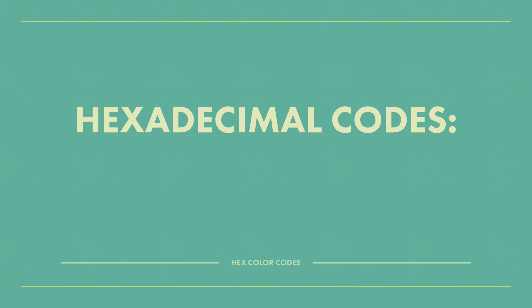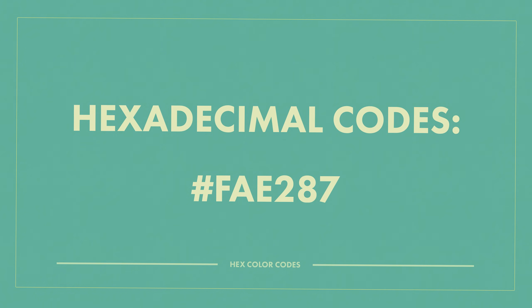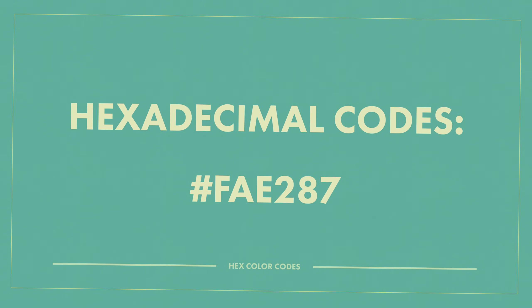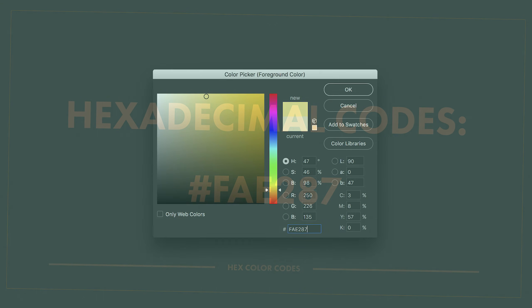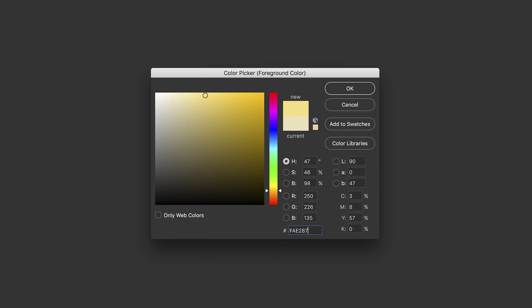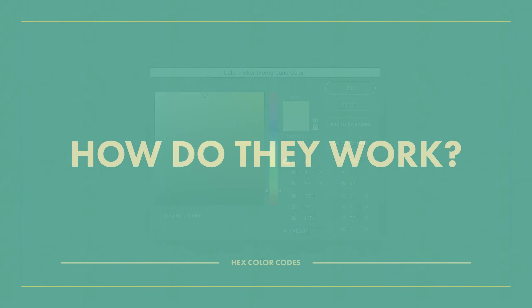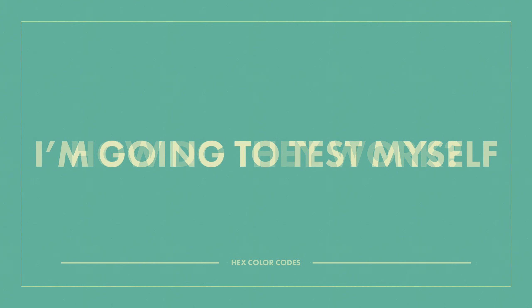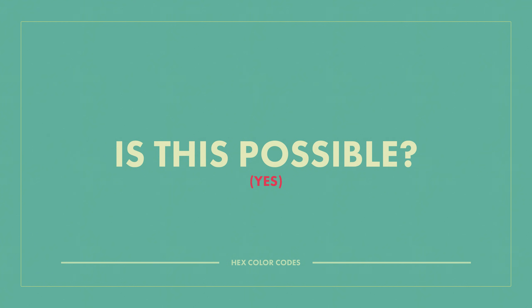If you've ever worked with color on your computer, you've probably seen hexadecimal codes — those seemingly random strings of six letters or numbers that make up colors in Photoshop or in your web design project. Can we make sense of them? Before we do that, let's have a quick bit of fun and test whether you should even stick around and watch this at all.